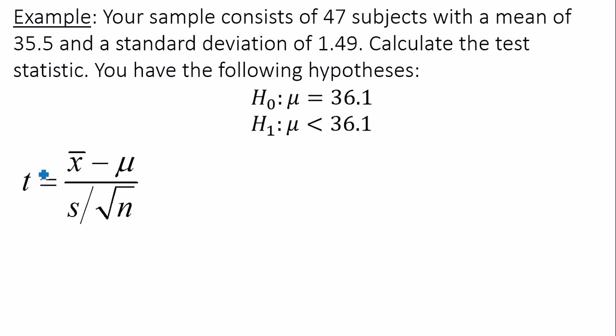The formula for the test statistic for a population mean when the standard deviation of the population is unknown is x bar minus mu divided by the standard deviation divided by the square root of n.